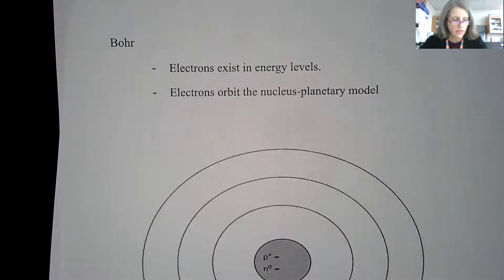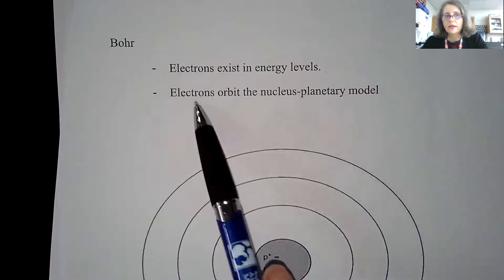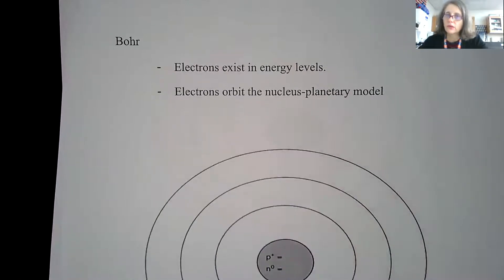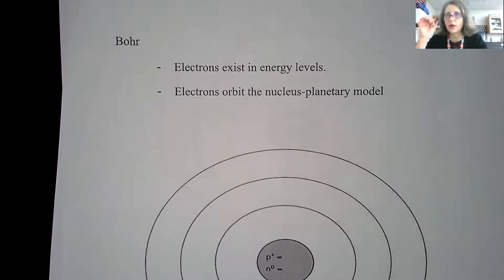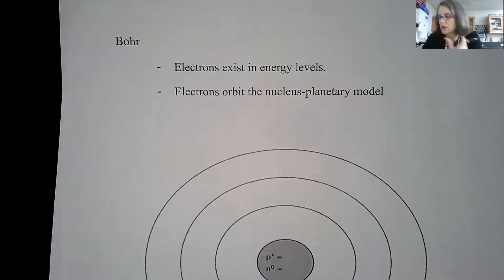Bohr was able to figure out that these electrons had some kind of energy component to them, and so he thought they were in different levels. He thought that the electrons essentially orbited the nucleus. It's sometimes called the planetary model because they had knowledge of our solar system and the planets orbiting the sun.